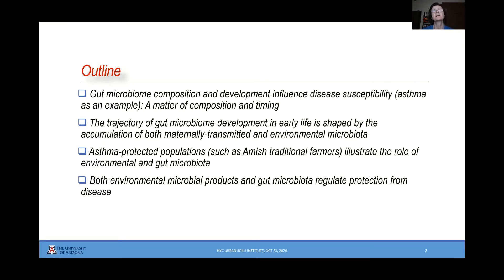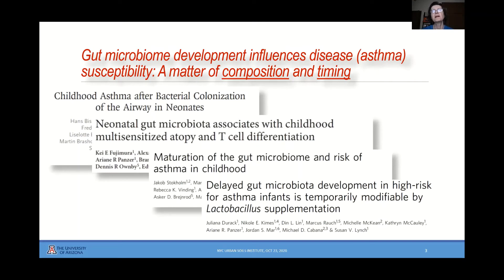We will take some special populations as examples that are very specifically informative about all of these things. Let me start with a statement. This statement is built on literally thousands of publications and lots of work from lots of people. The grounding of this whole presentation is that we know now that the gut microbiome is critical for how susceptible we are to certain diseases, asthma being perhaps one of the best understood examples.